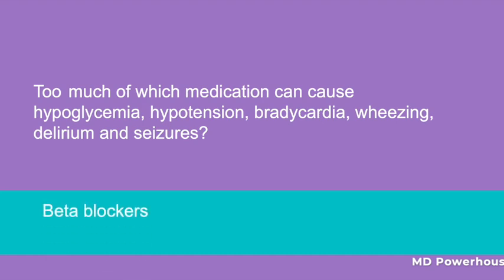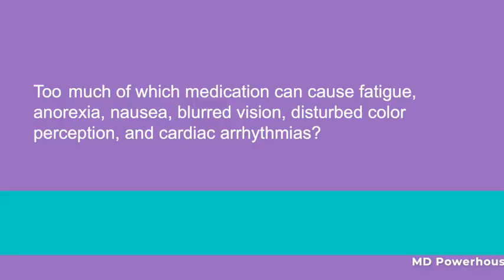Too much of which medication can cause fatigue, anorexia, nausea, blurred vision, disturbed color perception, and cardiac arrhythmias? Digoxin. Recall that we treat digoxin toxicity with digoxin-specific antibody.